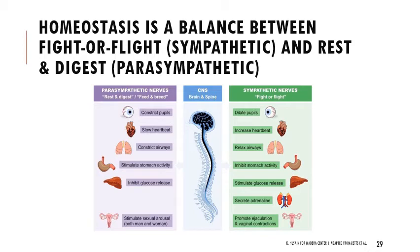For the sympathetic fight-or-flight response, you have dilated pupils, increased heart rate, relaxed airways, inhibited stomach activity, stimulated glucose release through glycogenolysis and gluconeogenesis, and secretion of adrenaline, epinephrine, and norepinephrine. It also promotes ejaculation and vaginal contractions. This also affects salivary glands: rest-and-digest increases salivary flow, while anxiety or a sympathetic response — like giving a presentation — decreases salivary production, causing dry mouth.